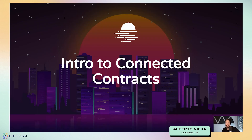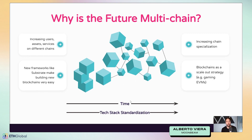Let's talk about connected contracts. We think the future is multi-chain — there's an increasing number of users, assets, and services on different chains. We've seen chains like Avalanche, Cosmos, Polkadot, and Near bring new assets, new users, new communities, fragmenting the space. On the other hand, new frameworks like Substrate make building blockchains very easy, so many teams are using Substrate to build their own standalone chains.